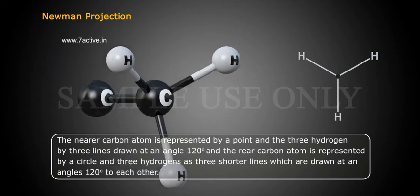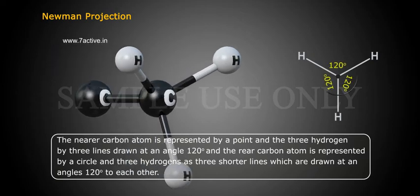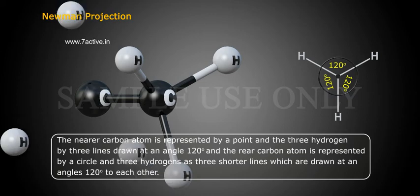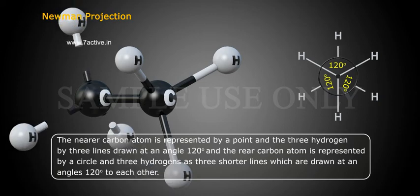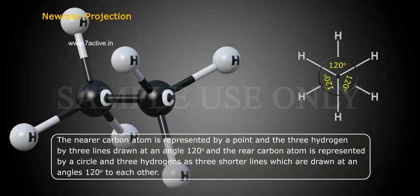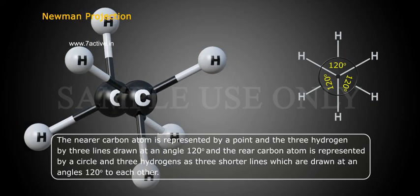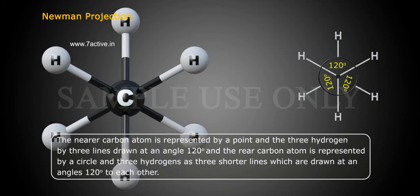The rear carbon atom is represented by a circle, with its three hydrogens shown as three shorter lines drawn at an angle of 120 degrees to each other.